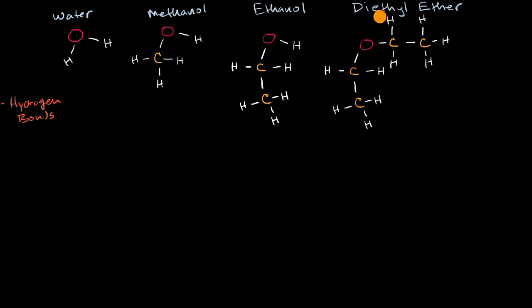We can see that diethyl ether won't form hydrogen bonds. We don't see any bonds between hydrogen and an oxygen, a nitrogen, or a fluorine. Ethanol has one oxygen-hydrogen bond. Methanol also has one oxygen-hydrogen bond. Water has two oxygen-hydrogen bonds.